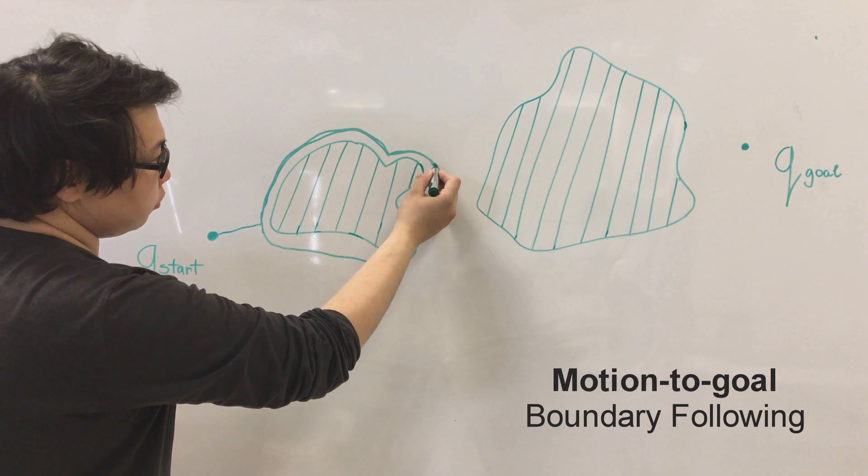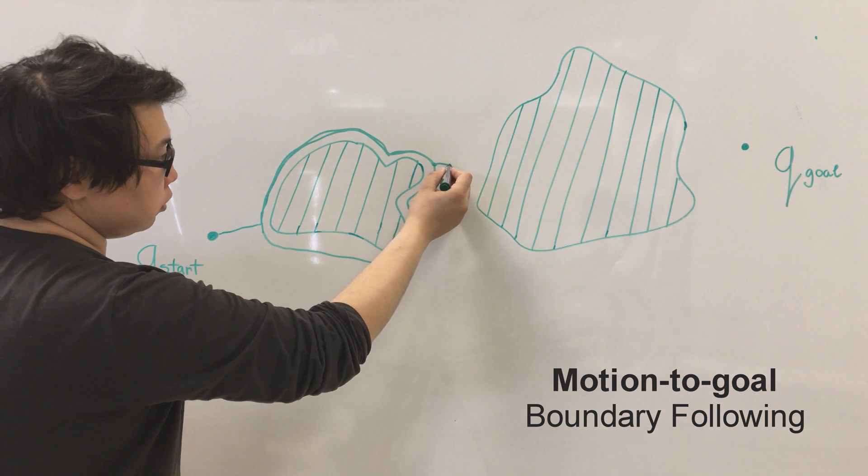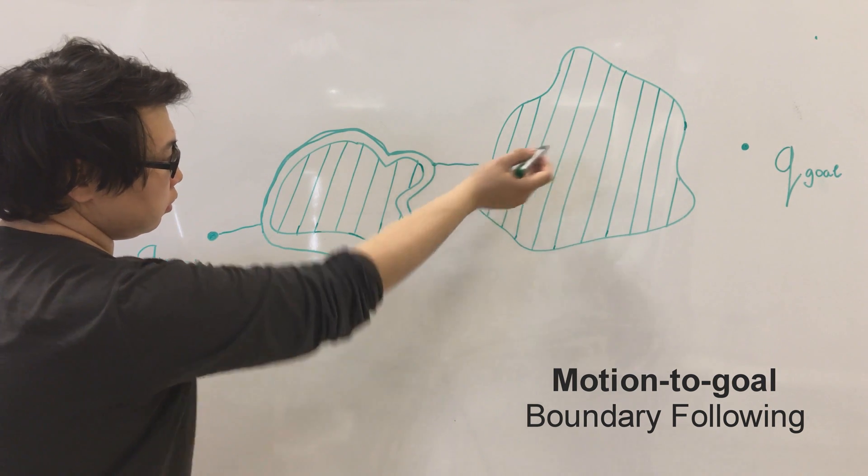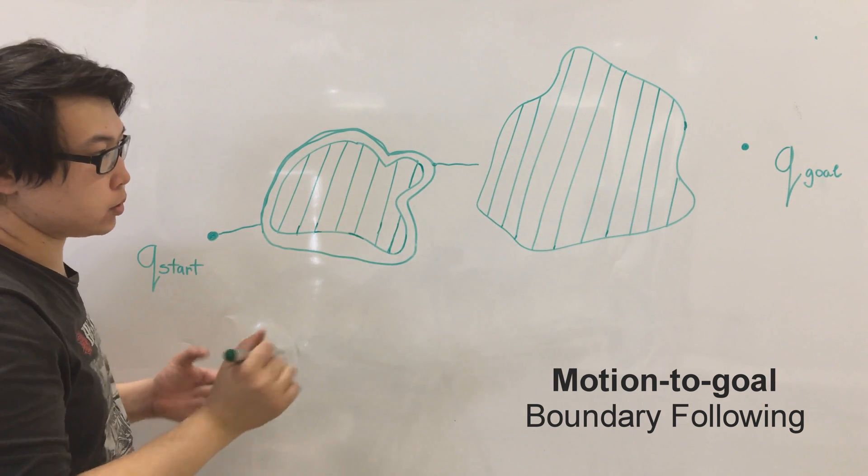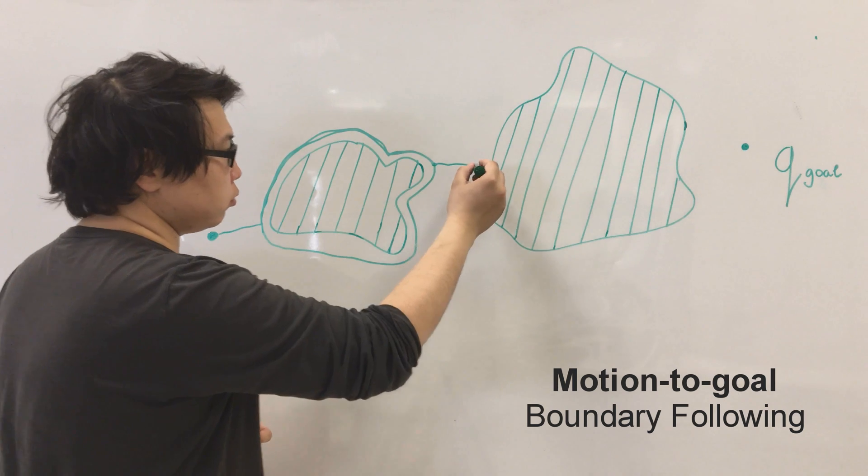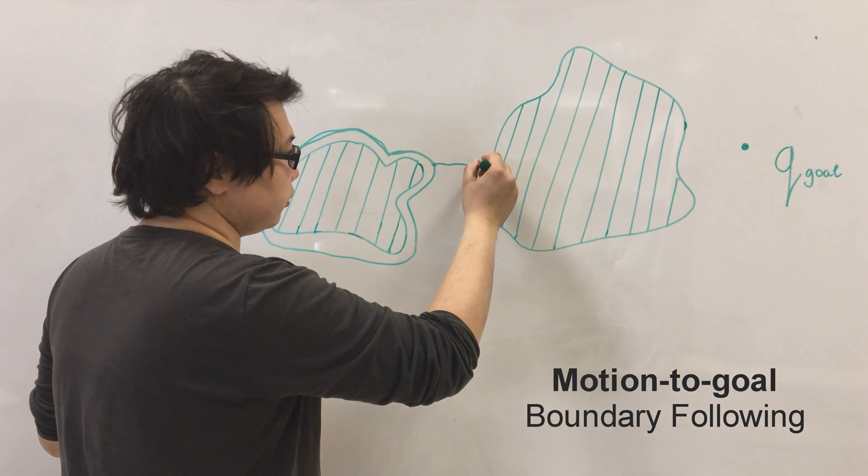So then we go towards the goal once more, we detect that there is an obstacle and we have to go around this obstacle.